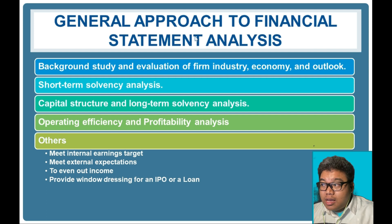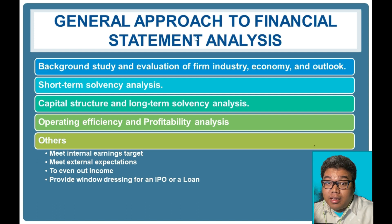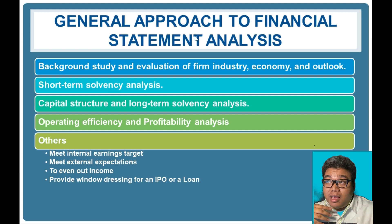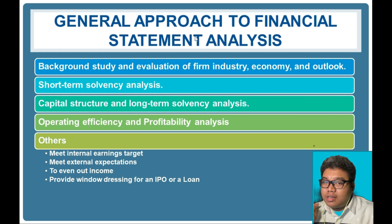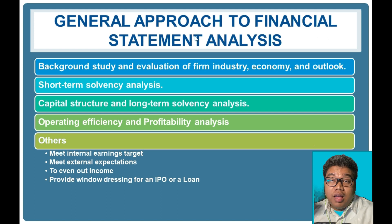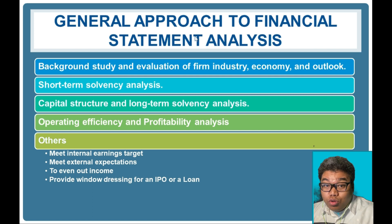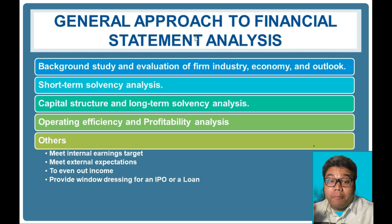The financial statements might be window-dressed or manipulated to be suitable for an IPO or a loan. These instances can be uncovered through financial statement analysis, because the relationships in the financial statements should be consistent. When manipulations occur, these relationships become inconsistent.